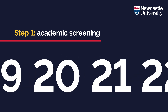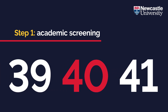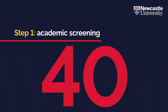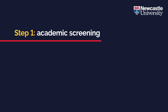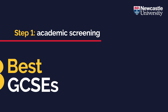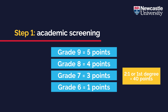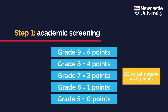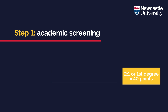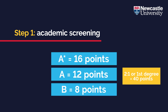Firstly, the applicant's most recently achieved academic grades are given a score out of 40. For most applicants applying when leaving school, this will be based on GCSE grades — we look at the best eight achieved GCSEs. National equivalents to GCSEs will also be considered. If you have already completed your A levels, we will look at the best three achieved grades, again with points given up to a maximum of 40.